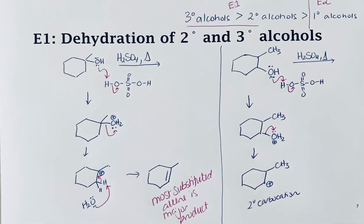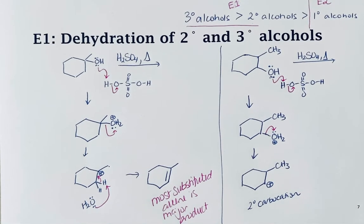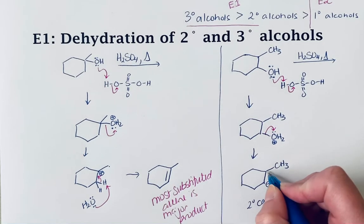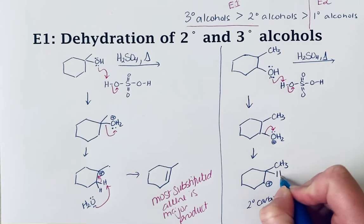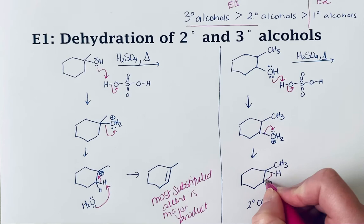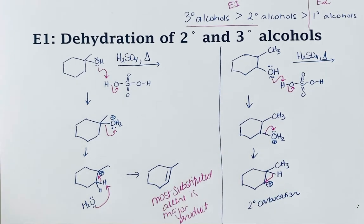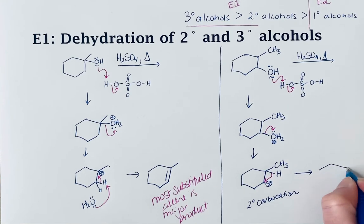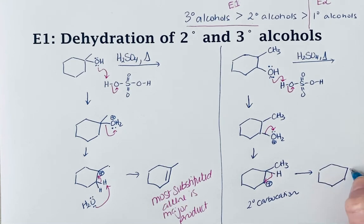If a secondary carbocation or any carbocation can rearrange to become more stable, it will do so quickly—this happens before the elimination step. We've got this tertiary center next door with an implied bond hydrogen. I'm going to do a hydride shift, and that's going to move the carbocation to that tertiary center.